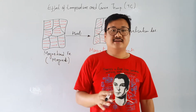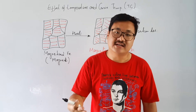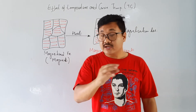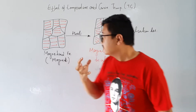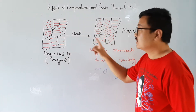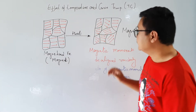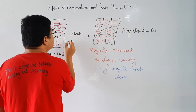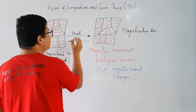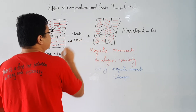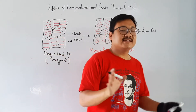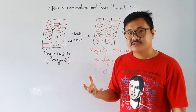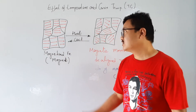So whenever we heat any material, the magnetization will decrease. This is very important. Now if I cool it down, the reverse happens — the magnetization will increase. So heating and cooling are just opposite to each other.